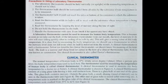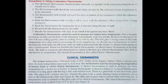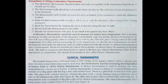Read the thermometer while its bulb is still in contact with the substance. Read the thermometer by keeping the level of the mercury along the line of sight — this is the main reading. Do not hold the thermometer by the bulb.